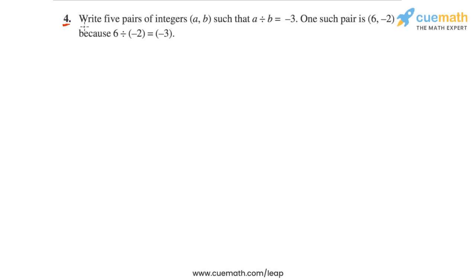In question 4, we have to write five pairs of integers a and b such that a divided by b is equal to minus 3. One such pair is 6 and minus 2, because 6 divided by minus 2 is equal to minus 3. This question is quite easy and straightforward — we have to write any five pairs of integers a and b such that a divided by b is equal to minus 3.